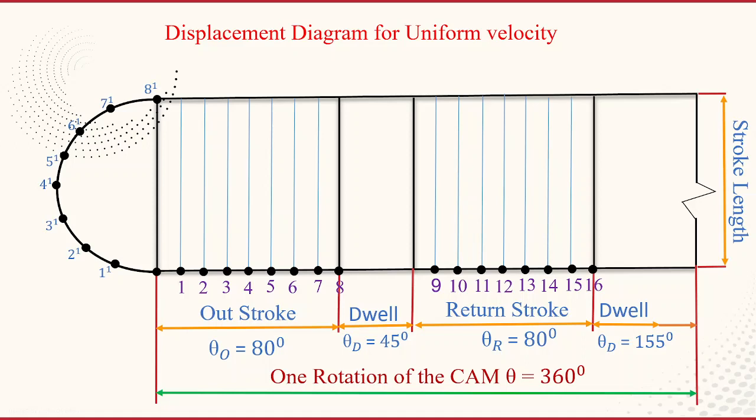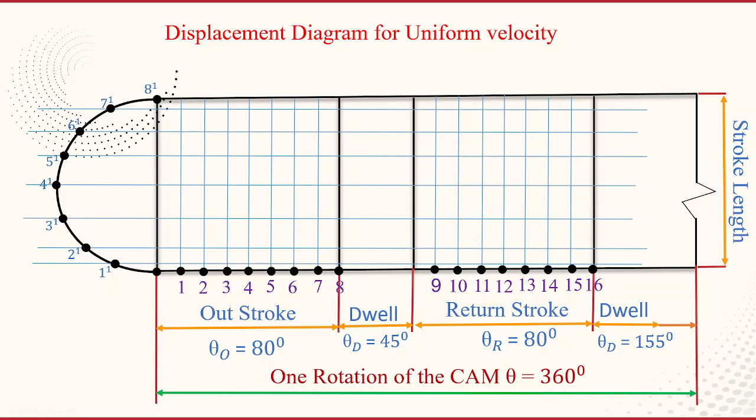And number this 1, 1 prime, 2 prime, 3 prime, 4 prime, 5 prime, 6 prime, 7 prime, 8 prime, like that give that number. Now from each point draw the horizontal lines.